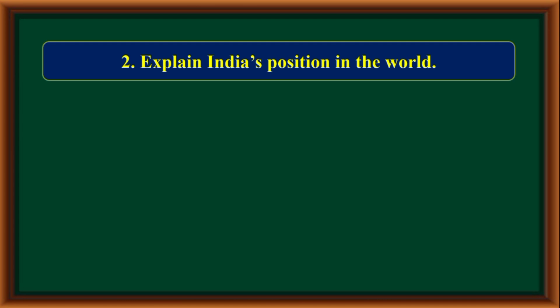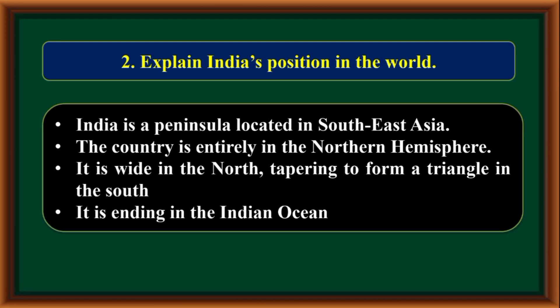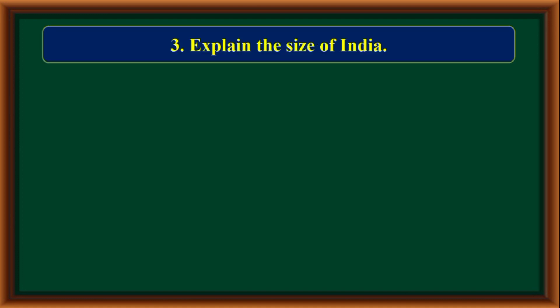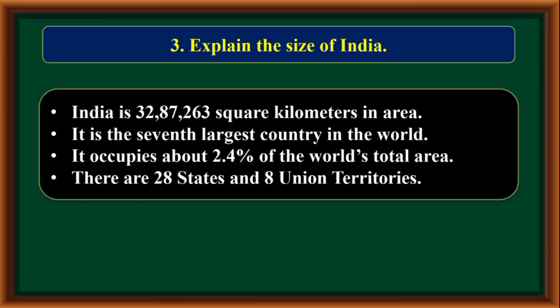Explain India's position in the world. India is a peninsula located in Southeast Asia. The country is entirely in the northern hemisphere. It is wide in the north, appearing to form a triangle, and narrows toward the south, ending in the Indian Ocean.